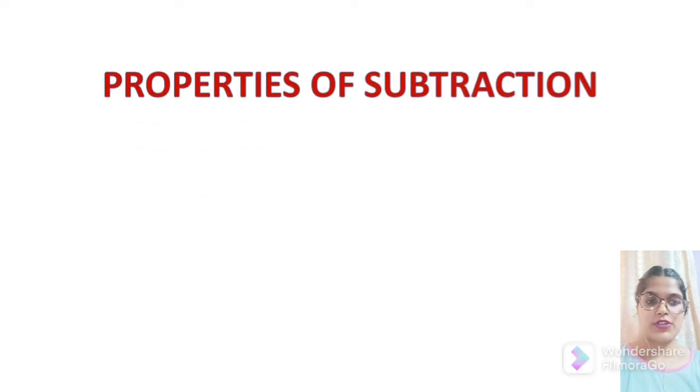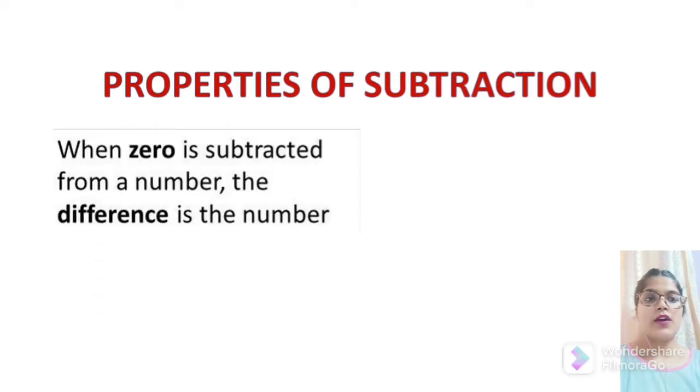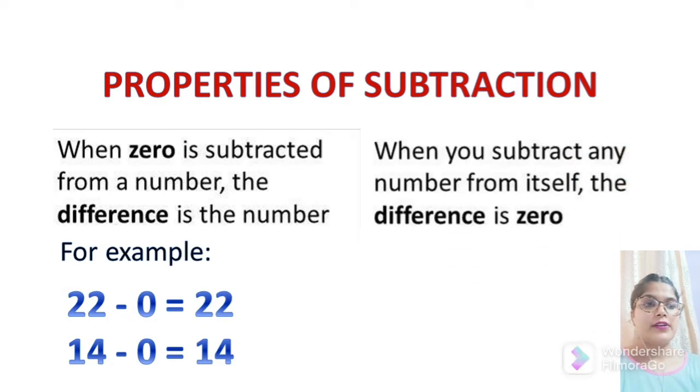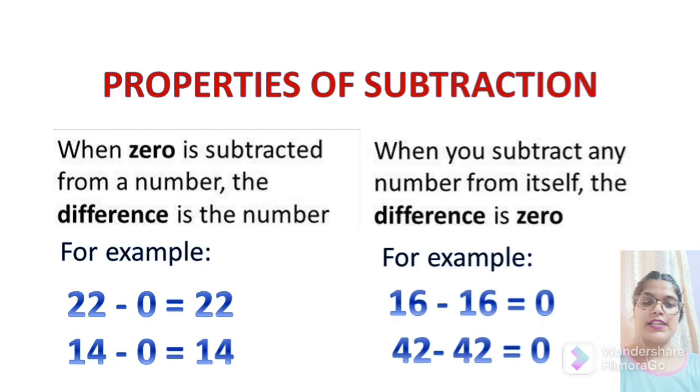Properties of subtraction. When 0 is subtracted from a number, the difference is the number. For example, 22 minus 0 will get the same number 22. Next is when you subtract any number from itself, the difference is 0.